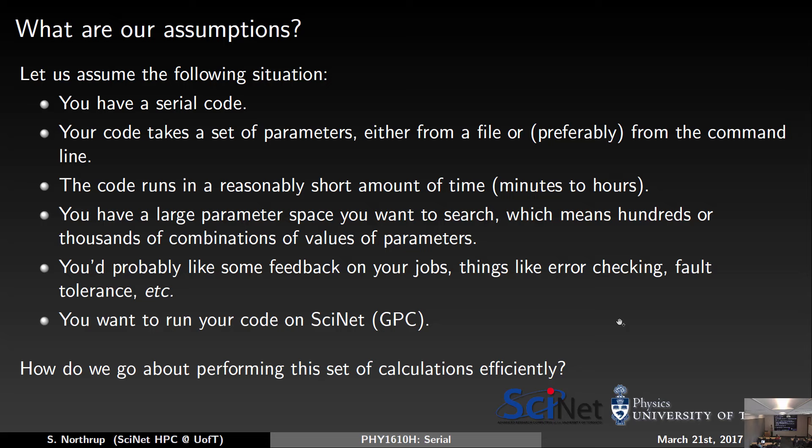On a cluster like the SciNet GPC, you have lots of nodes but individually they're not very powerful per core. We have 30,000 cores, but they're individually slower than your laptop. To use them efficiently you have to structure them so you're using a lot at the same time. At a minimum, we want the system used efficiently — we don't want people running serial jobs when there are eight cores available, so you should have at least eight units of workload.